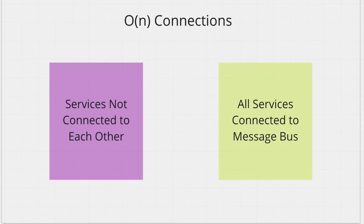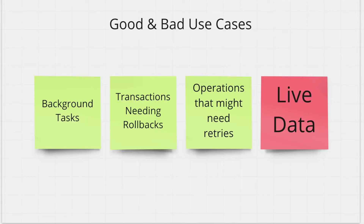How many connections do we need in this architecture? If we have n services, we need n connections — every service just needs to be connected to the message bus; they don't need to be connected to each other. So the number of connections does not grow exponentially with the number of services. However, it might look like you're getting lots of benefits without any disadvantage — but that's not true.